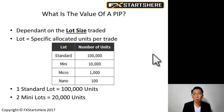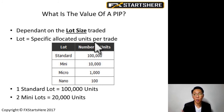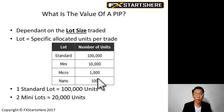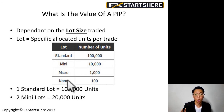The value of a PIP is dependent on the lot size you're trading. Lots are the specific allocated units per trade. One standard lot is 100,000 units, one mini lot is 10,000 units, one micro lot is 1,000 units, and one nano lot is 100 units. On the MT4 platform, which we'll be using for training, we only have micro lots — no nano lots. Some brokers with in-house platforms do go down to nano lots.